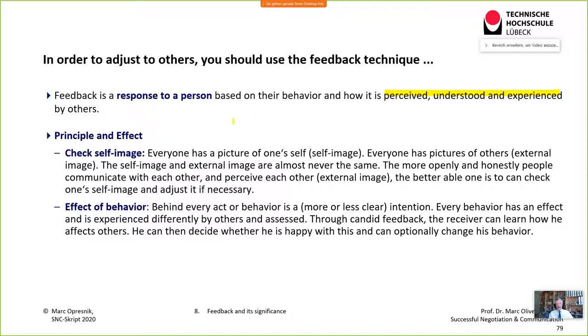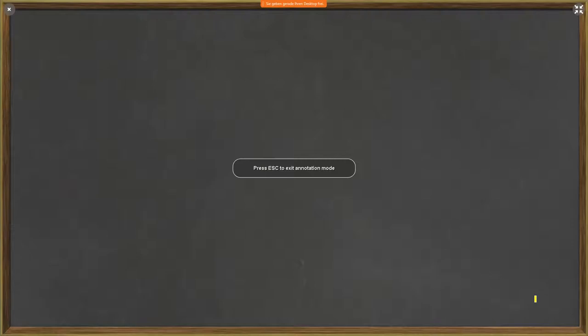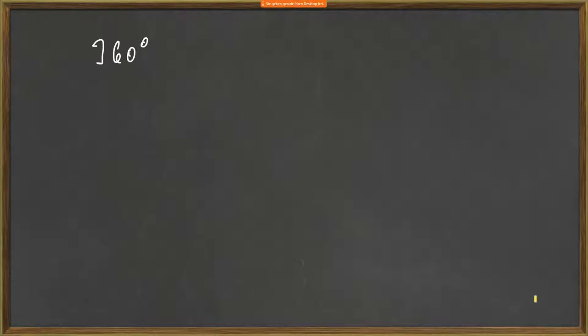This incongruency between intention and reception creates what we call 'noise,' and feedback helps to avoid that. One very important effect of feedback is that it checks your self-image. At Shell, we had a simple tool — instead of a full 360-degree feedback, we had a sheet where you fill in: this person should stop, continue, and start doing certain things.